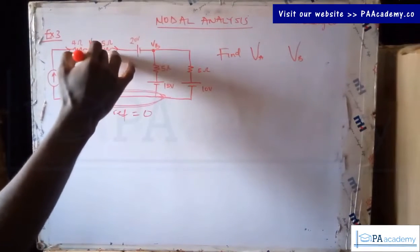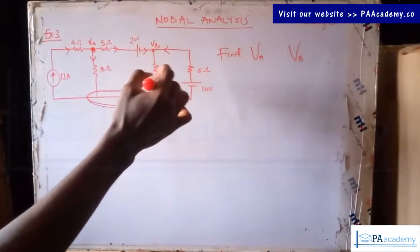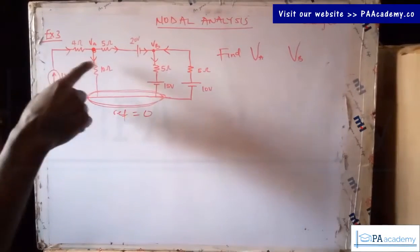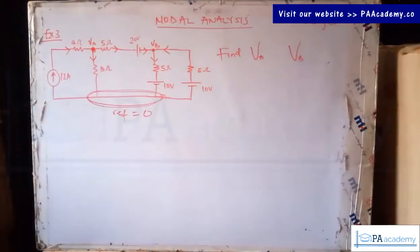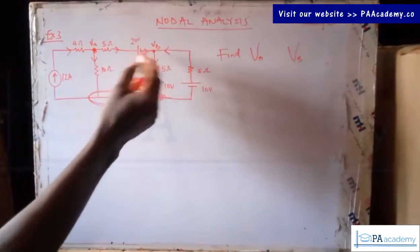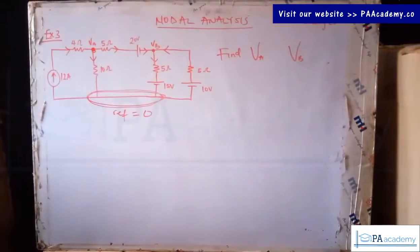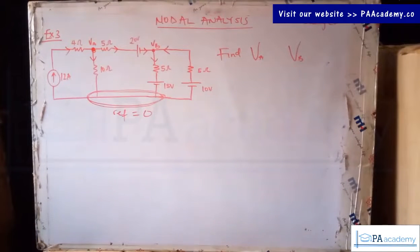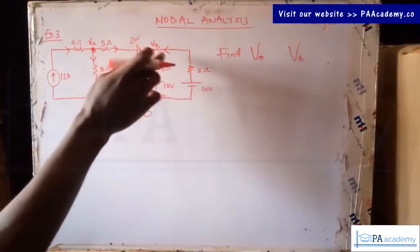Having identified the nodes and picked our reference, let's now give some random direction to our currents before we apply Kirchhoff's Current Law. For this particular circuit, you can choose whatever current direction you want — it's left to you, and you will still arrive at the same answer. For this node I'll pick one direction, and for this other node another direction.